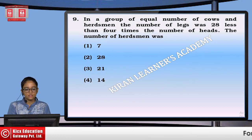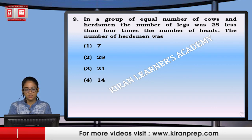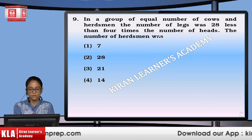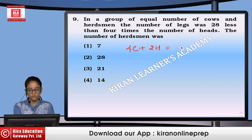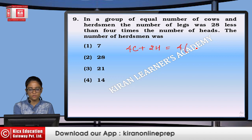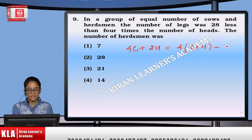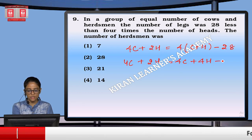In a group with an equal number of cows and herdsmen, the number of legs was 28 less than 4 times the number of heads. Legs: 4 cows plus 2 herdsmen equals 4 times (cows plus herdsmen) minus 28. So 4C plus 2H equals 4C plus 4H minus 28, giving 2H equals 28.